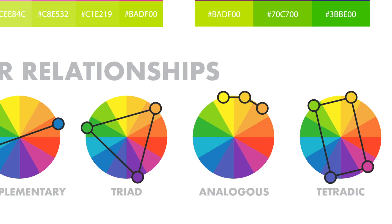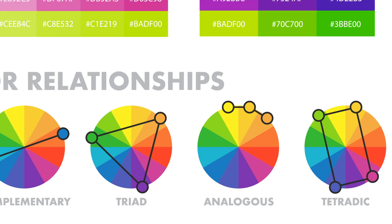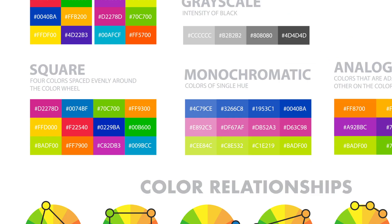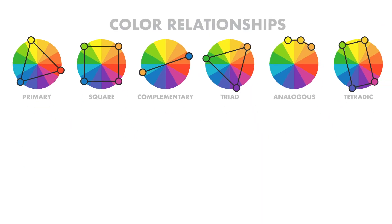Triadic colors are evenly spaced around the color wheel and tend to be very bright and dynamic. Using a triadic color scheme creates visual contrast and harmony simultaneously, making each item stand out while making the overall image pop. There are also square, tetradic color schemes, and so on.